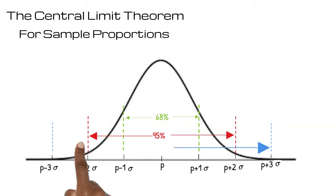And 99.7% of the proportions lie between three standard deviations below and three standard deviations above the actual proportion.